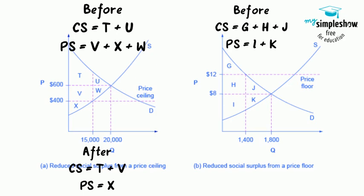A price floor is imposed at $12, which means that quantity demanded falls to 1,400. As a result, the new consumer surplus is G, and the new producer surplus is H plus I.